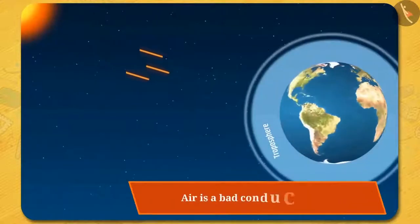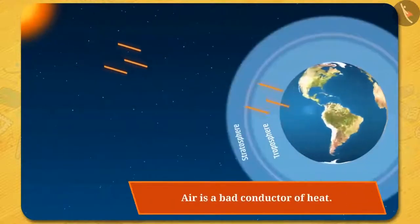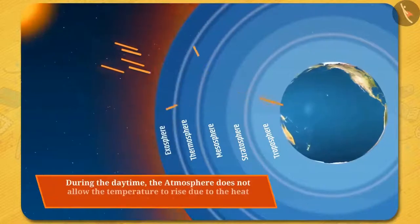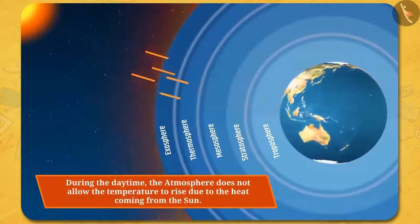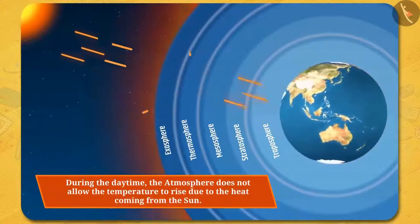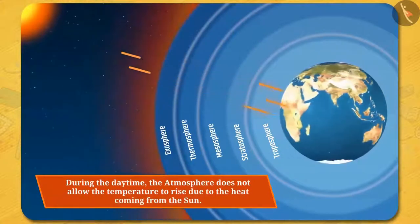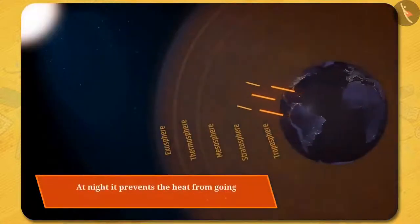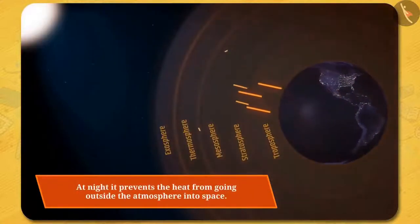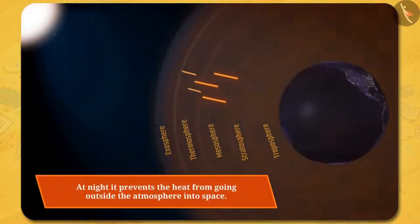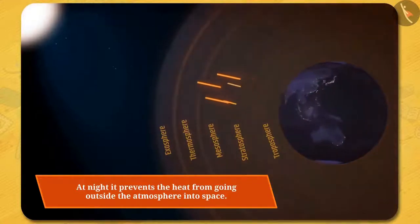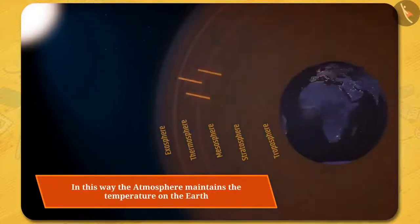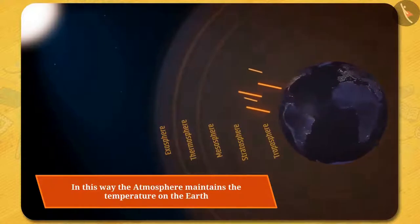You know that air is a bad conductor of heat. So during the daytime, due to the heat coming from the sun, the atmosphere does not allow the temperature to rise, and at night it prevents the heat from going outside the atmosphere into space. In this way, the atmosphere maintains the temperature on the earth.